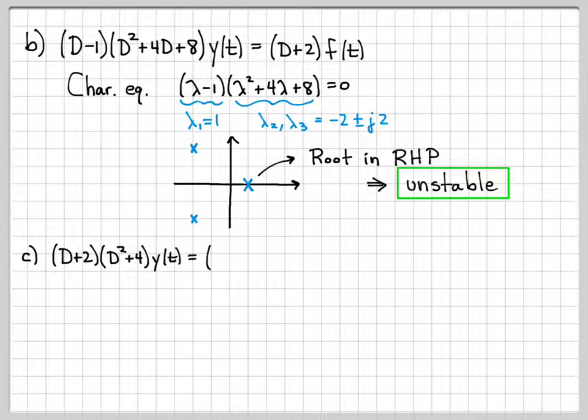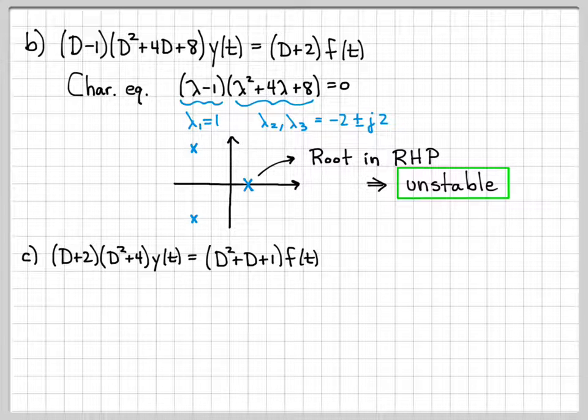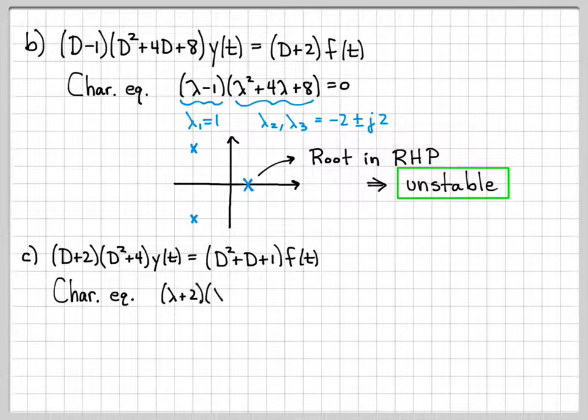Let's do part C. Here's another system description. Again, we don't care about the right side from system stability perspective. All that matters is the polynomial on the left, from which we get our characteristic equation. So if that equals 0, that's the characteristic equation. Lambda 1 is negative 2.